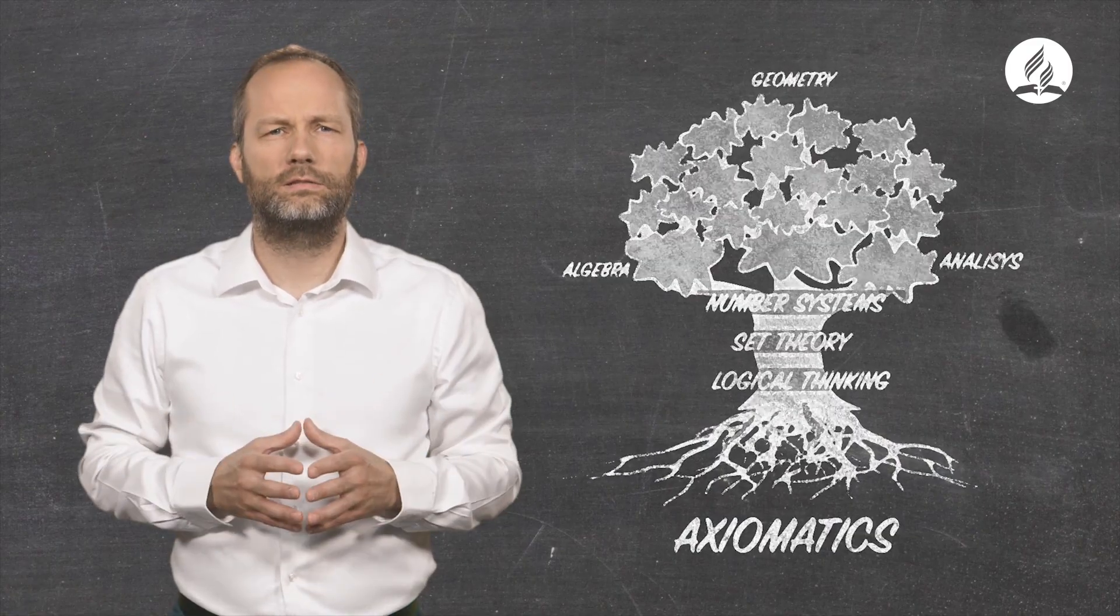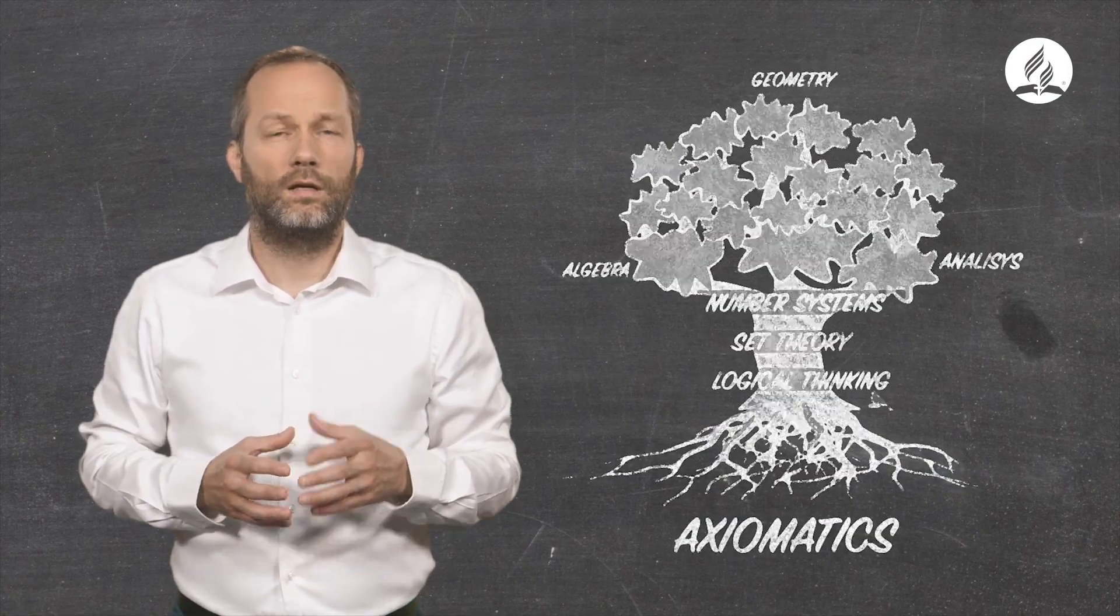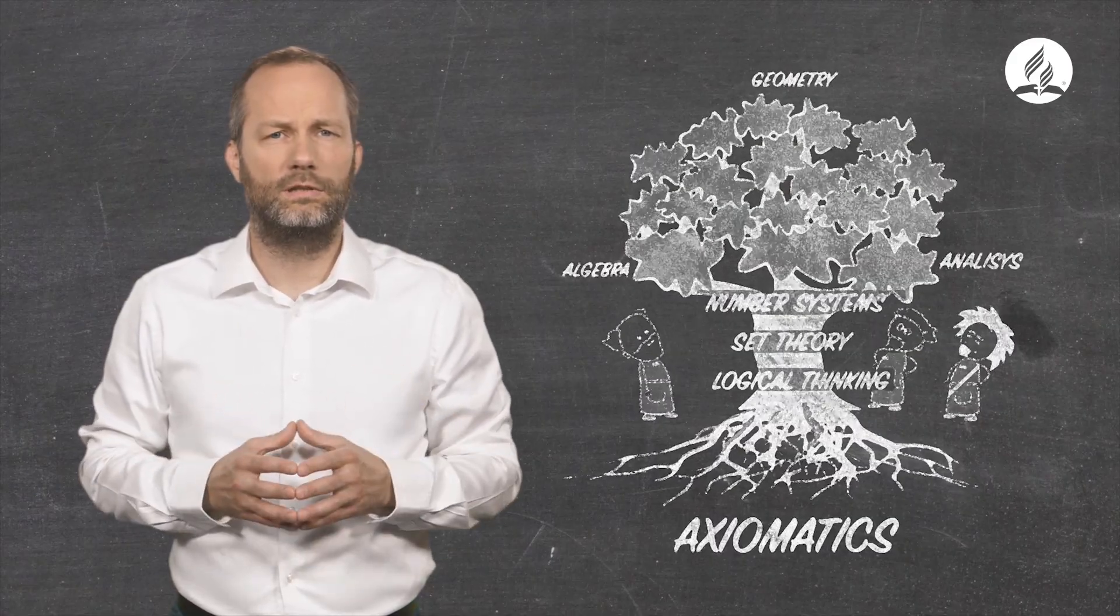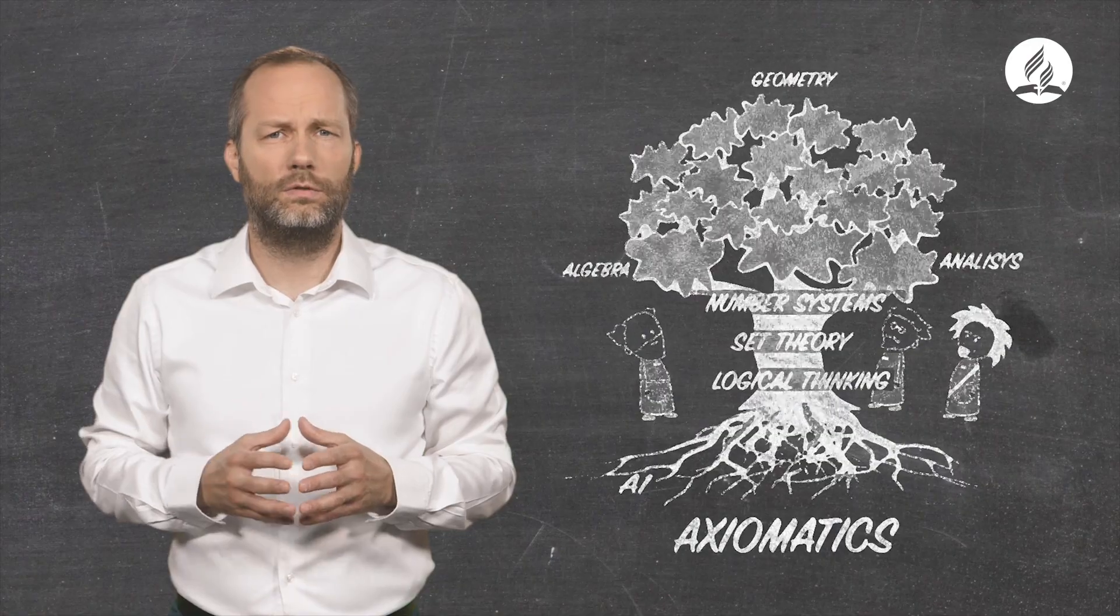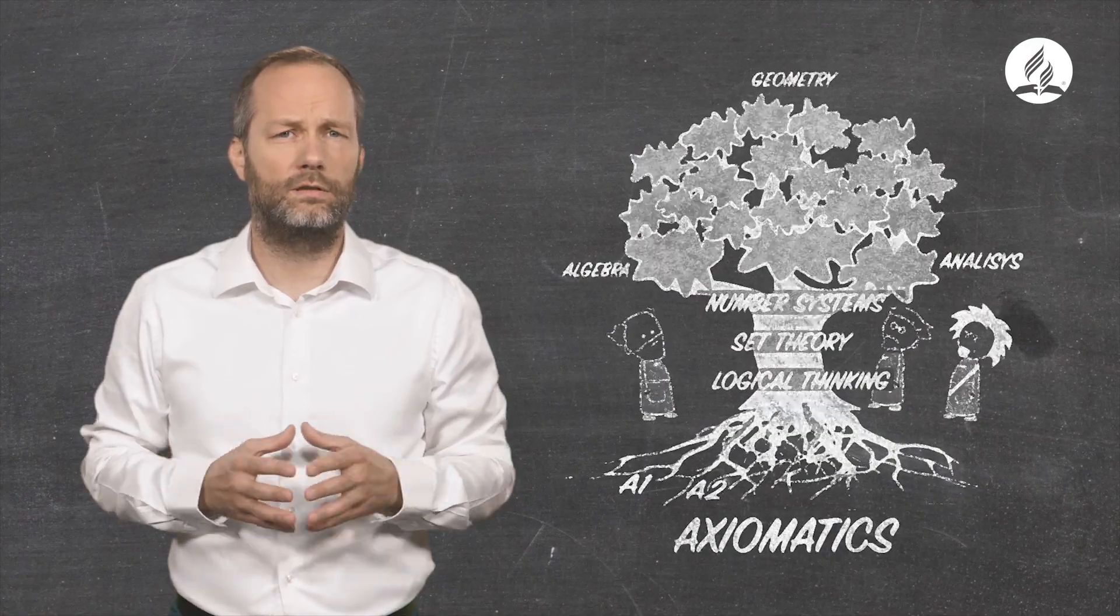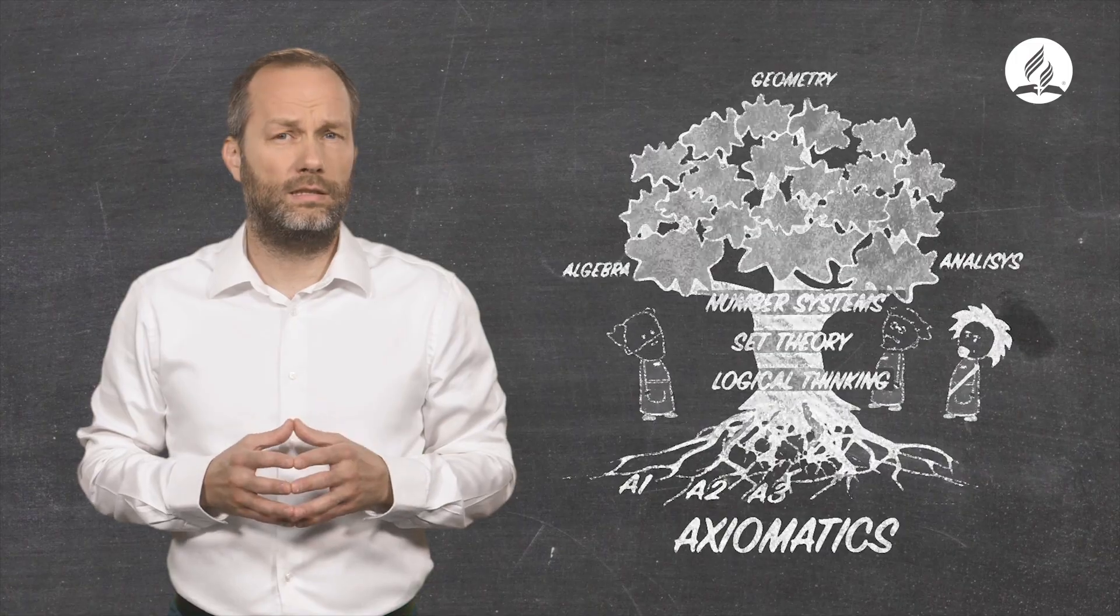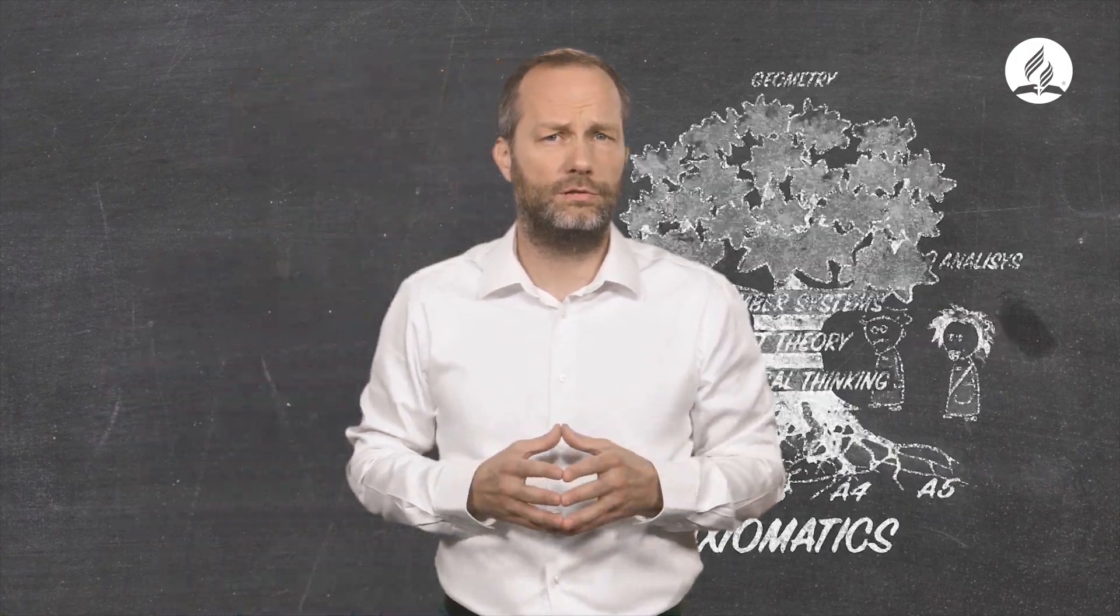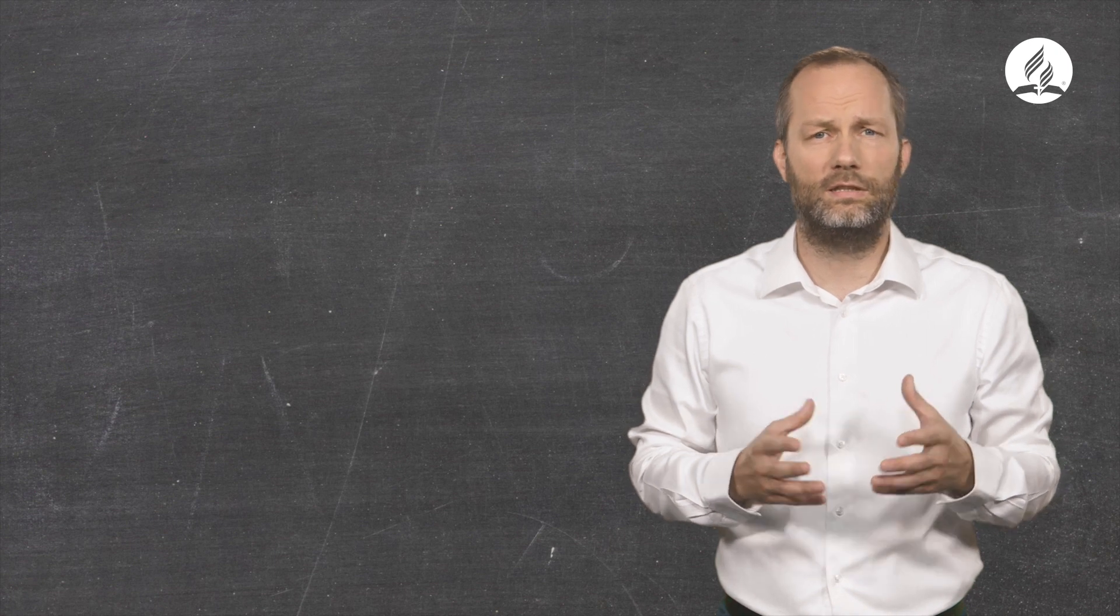What is axiomatics? An axiomatic system is a set of unprovable propositions accepted as true by the scientific community. So, mathematics rely on a number of unprovable propositions that we must believe and accept?